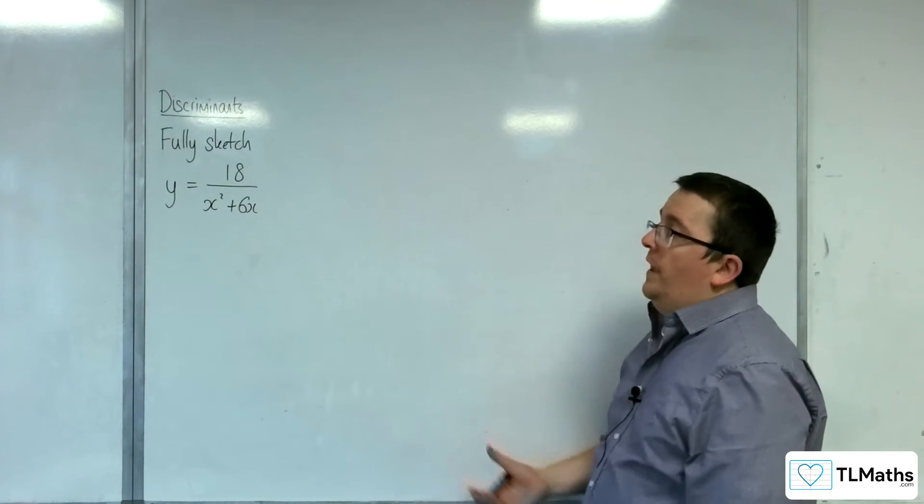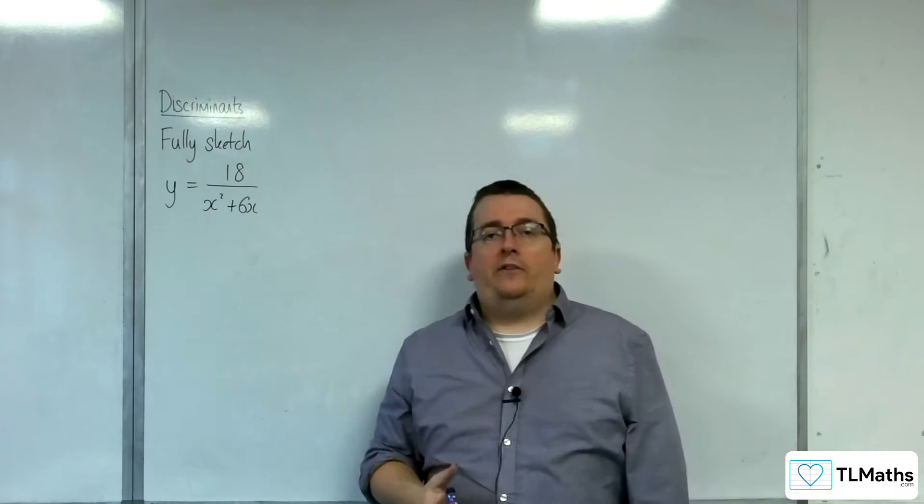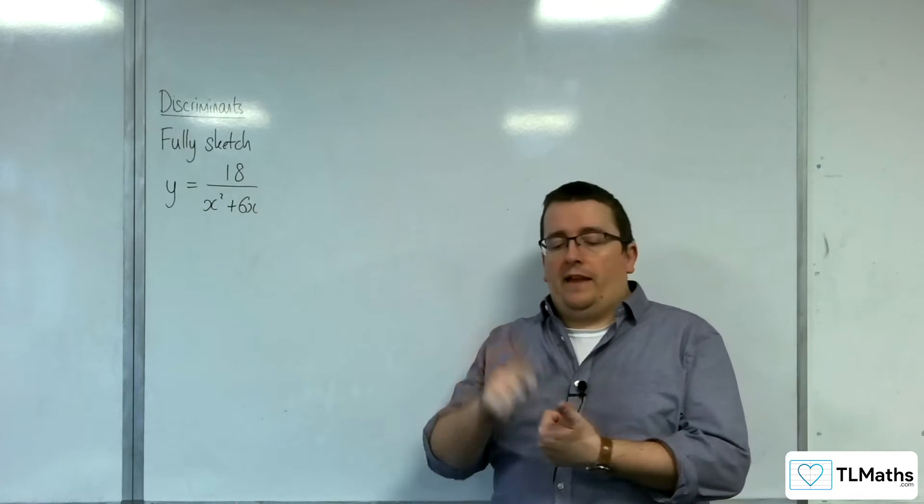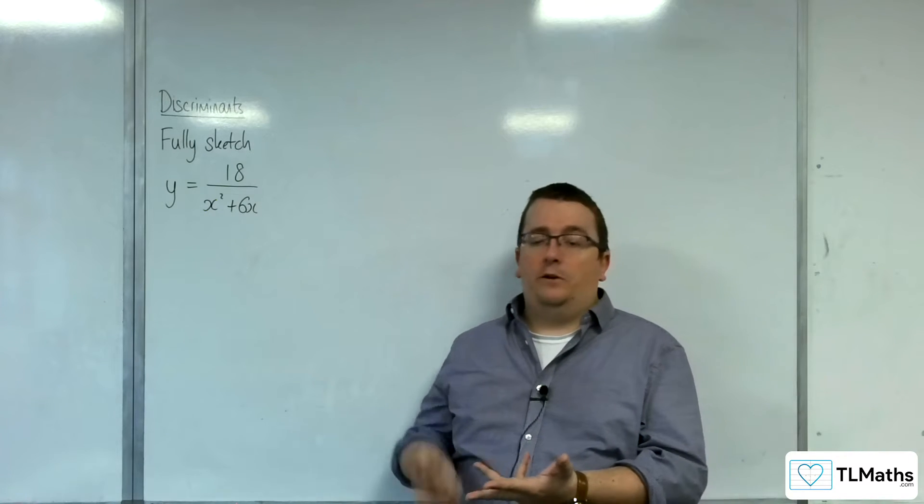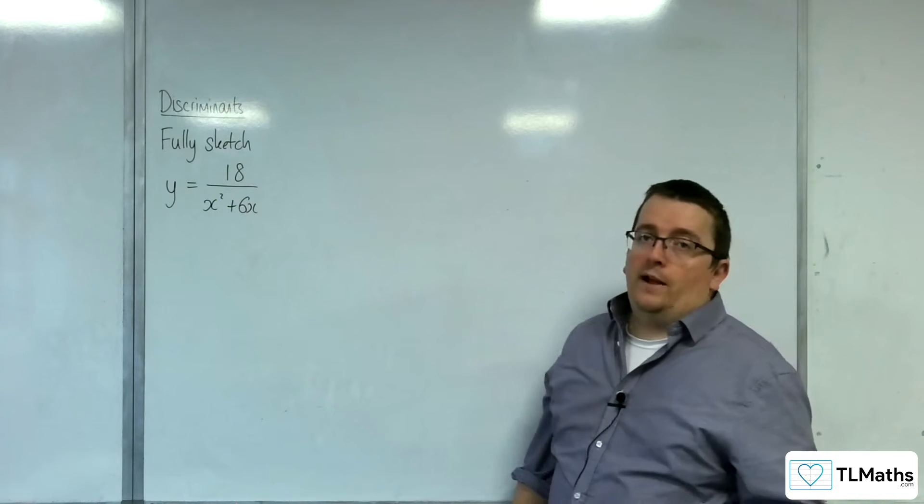In this video, I'm going to fully sketch y equals 18 over x squared plus 6x. So this means I want to know where it crosses the x-axis, the y-axis, I want to know vertical asymptotes, horizontal asymptotes, I want to know stationary points, no calculus allowed.